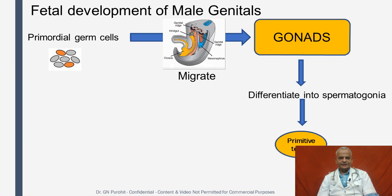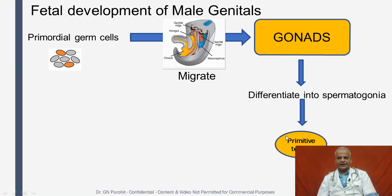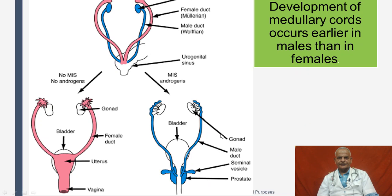First we discuss about the fetal development of the male genitals. The primordial germ cells, during fetal development, migrate to the genital ridge and form the gonads. They then differentiate into spermatogonia, constituting the primitive testes. The development of the medullary cords occurs earlier in males as compared to females.